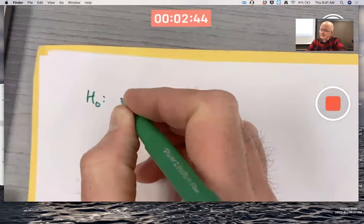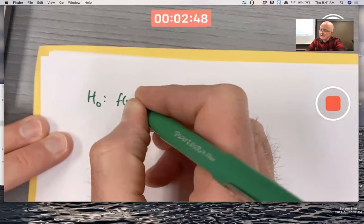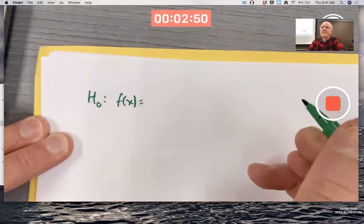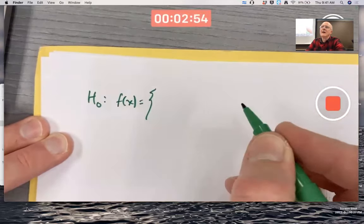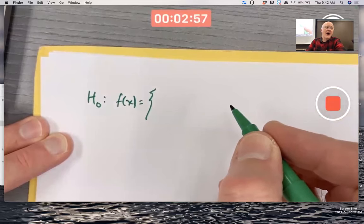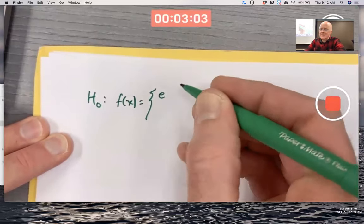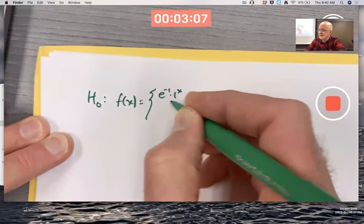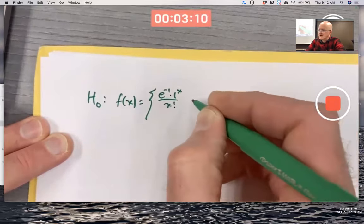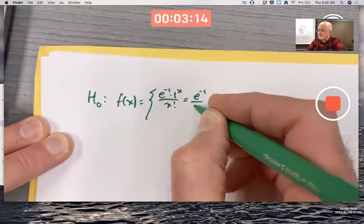Is the PMF of the random variable X equal to the PMF of a Poisson with a mean of one. So this is going to be e to the negative one times one to the X over X factorial, which since one to the X is one, simplifies to just e to the negative one over X factorial.